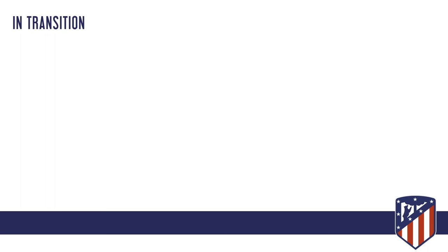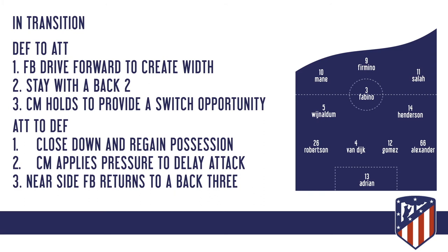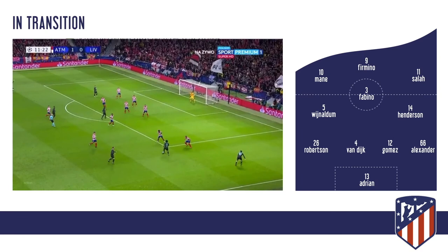In transition — defence to attack: the full-backs drive forward to create width, they stay with a back two, and the centre mid holds to provide a switching opportunity. Attack to defence: they close down and regain possession as quickly as possible; the centre mid applies pressure to delay the attack, and the near-side full-back returns to form a back three. In our last game, you can see Robertson bombing on and Alexander-Arnold providing width, with Fabinho trying to regain position.